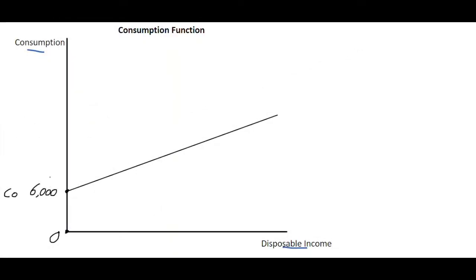So six thousand is our starting point. Let's say we take the economy at one point in time and the consumption level is at eight thousand euro and the income level, the disposable income in this economy is at ten thousand.